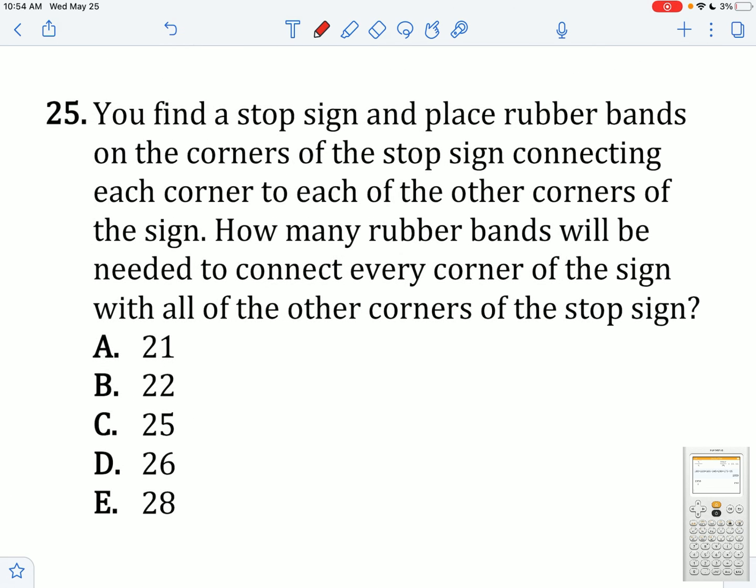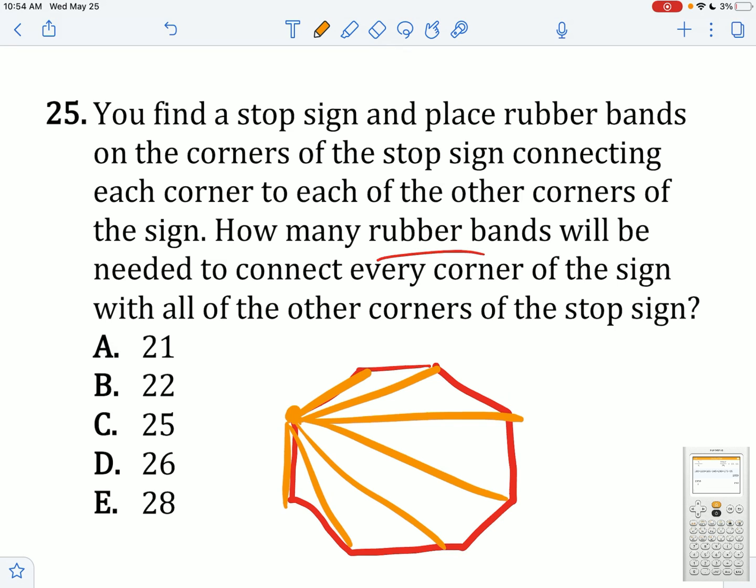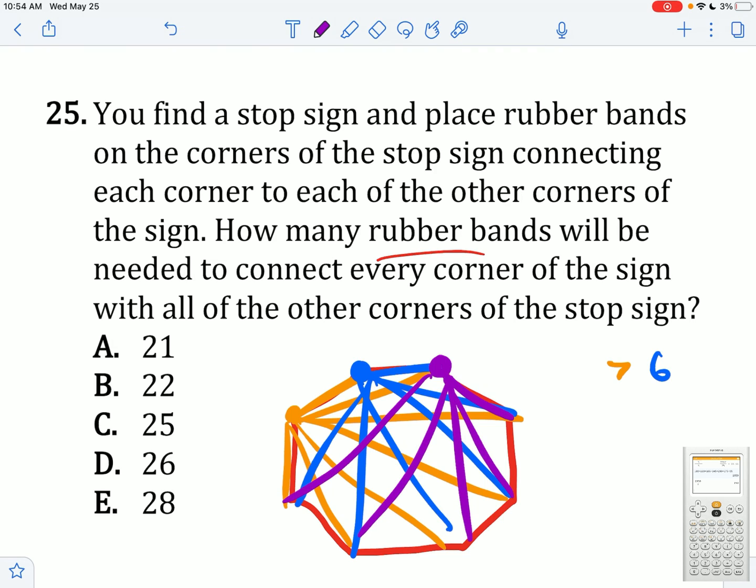You find a stop sign and place rubber bands on the corners connecting each corner to each of the other corners. How many rubber bands will be needed? Let's first draw a stop sign shape so we can visualize the problem. So let's start with the first corner. I'm going to have a rubber band there, there, there, there, there, there, and there. That's 1, 2, 3, 4, 5, 6, 7 of them. And then from the other corner, let's do it from here. That's 3, 4, 5, 6. I could add another one here, but I already have one. So now we have 6 of the blue, 7 of the orange. Let's do purple now. 1, 2, 3, 4, 5. You can see the pattern. It's going to be 7 plus 6 plus 5 plus 4 plus 3 plus 2 plus 1. Let's add that up on the calculator. You end up getting 28.